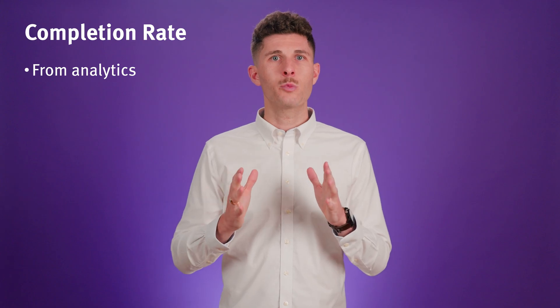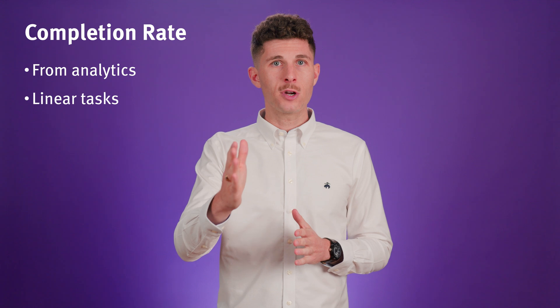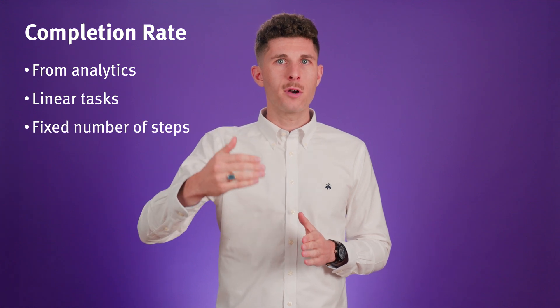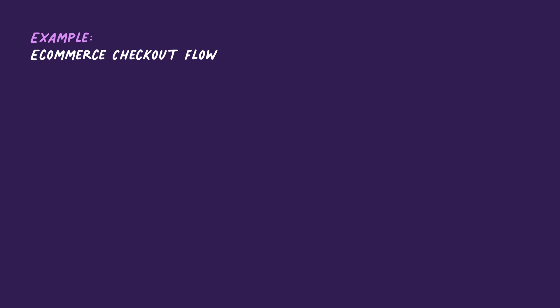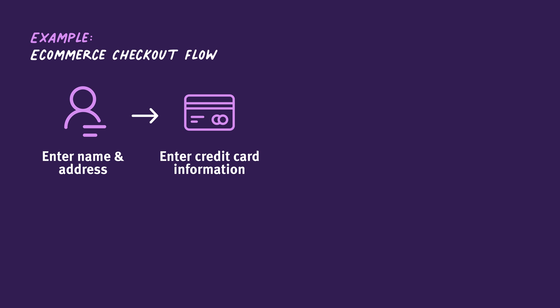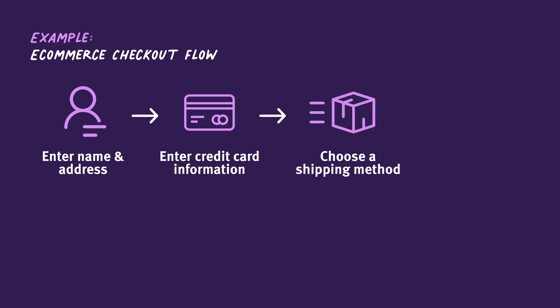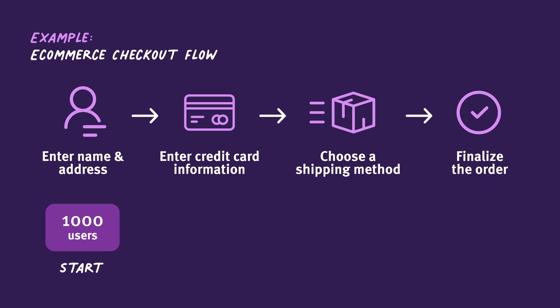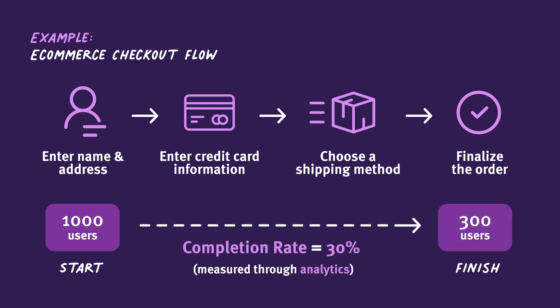This is the case when users go through a linear process with a fixed number of steps. For example, the checkout flow of an e-commerce website — you must enter your name and address, your credit card information, choose your preferred shipping method, and then order your item. A linear flow with a fixed number of steps. In such cases, we can precisely measure how many users started and finished the process.